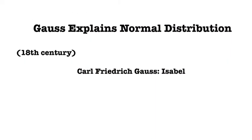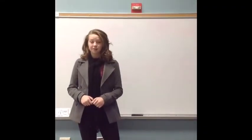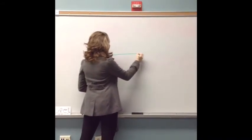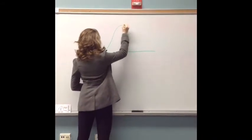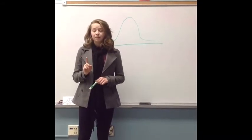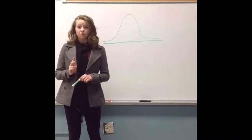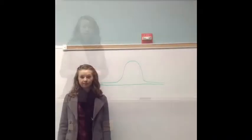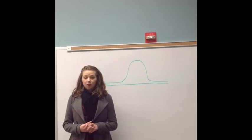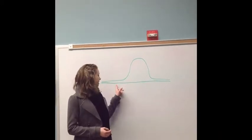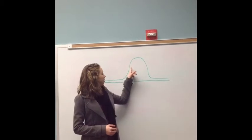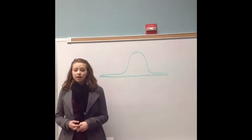Normal distribution! Hi, I'm Carl Friedrich Gauss, and I was an astronomer in the eighteenth century. I created Normal Distribution. Normal distribution has five properties. One, the mean, median, and mode are all equal. Two, it has a normal bell curve shape. Three, the total area under the curve is equal to one. Four, the curve gets close to the x-axis and extends forever, but never touches the x-axis. Five, there are points on the curve directly here and here that are called influential points.